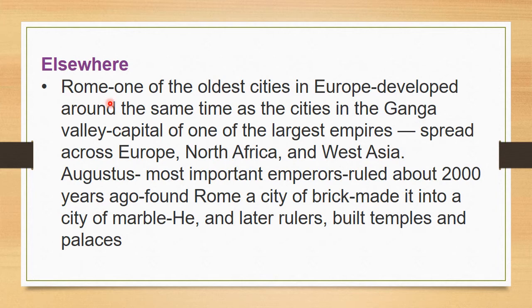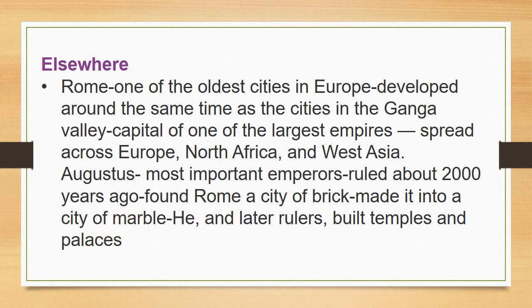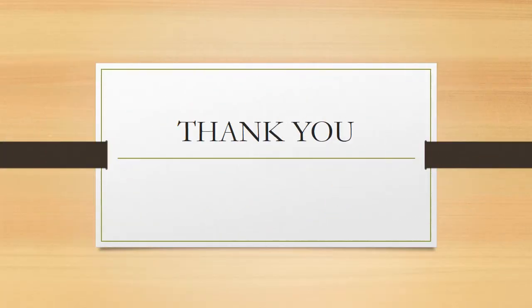Rome is one of the oldest cities in Europe, and it developed at the same time as the cities in the Ganga Valley. It became the capital of one of the largest empires, spread across Europe, North Africa, and West Asia. Augustus was the most important emperor, who ruled about 2000 years ago. He found Rome as a city of brick and changed it into a city of marble. Later, many rulers built temples and palaces there, making Rome very famous.